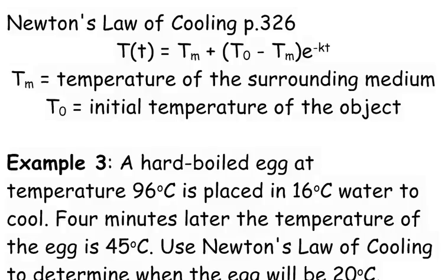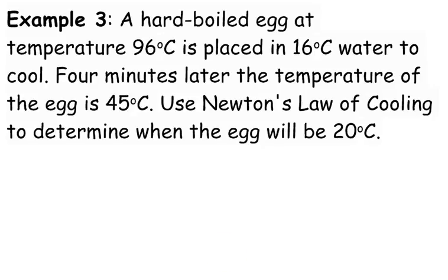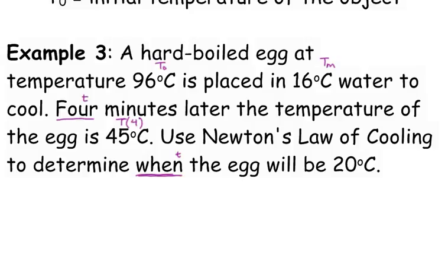Let's identify all these different amounts in our problem. The egg at temperature 96 degrees Celsius—that is the initial temperature—is placed in 16 degrees Celsius water to cool. That is the temperature of our medium. Four minutes later, the temperature of the egg is 45 degrees Celsius. That is T(4). Use Newton's Law of Cooling to determine when the egg will be 20 degrees Celsius. That's another t we're going to be solving for after we use the first one.